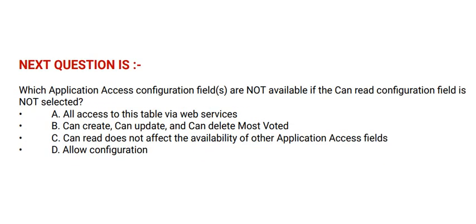Next question is: which application access configuration fields are not available if the can read configuration field is not selected? Option A: all access to this table via web services. Option B: can create, can update, and can delete. Option C: can read does not affect the availability of other application access fields. Option D: allow configuration. And the correct answer is option B.